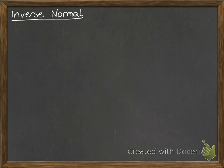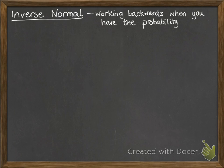The next stage of our journey is learning how to do the inverse normal. This is when you're working backwards — you're given a probability and you're working out what value would give you that probability. Whereas before we were given a value and working out the chances of it happening; now we're going the other way around.